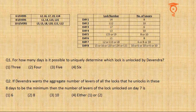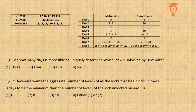Question 1: For how many days is it possible to uniquely determine which lock is unlocked? We have confirmed locks on Day 1, Day 2, Day 3, Day 4, and Day 6 — that is five days. The answer is the third option: five.